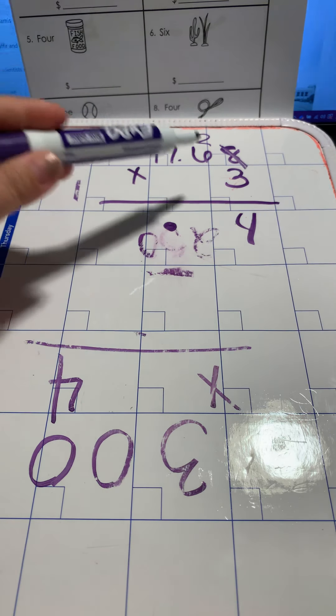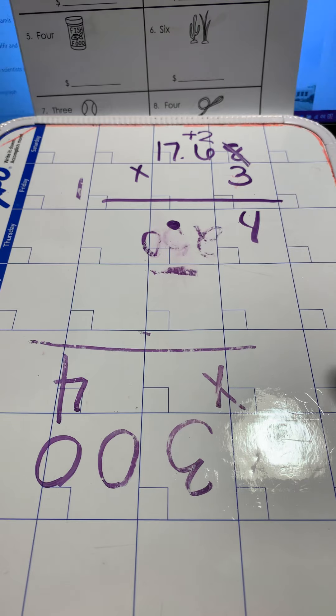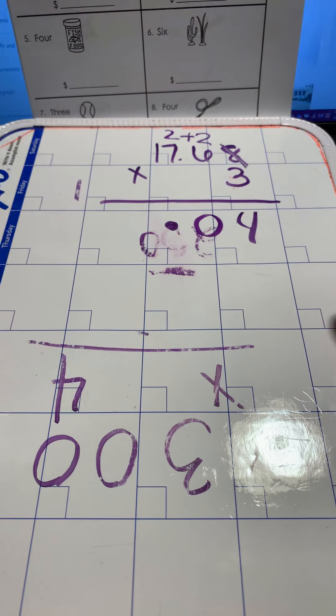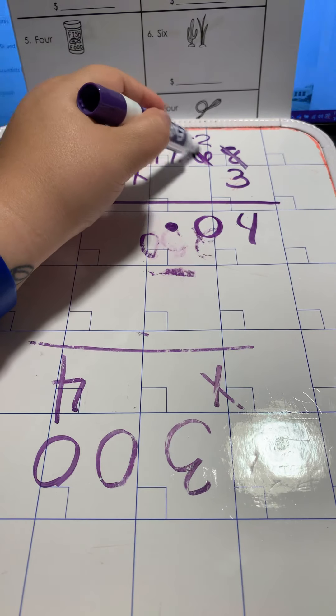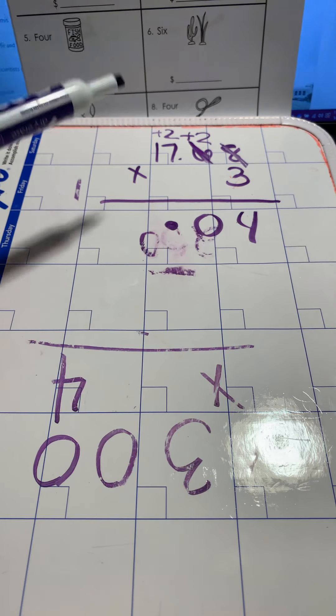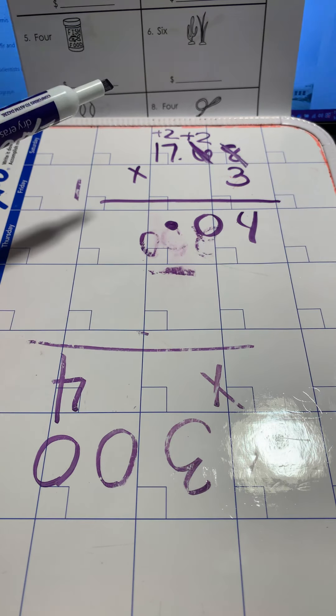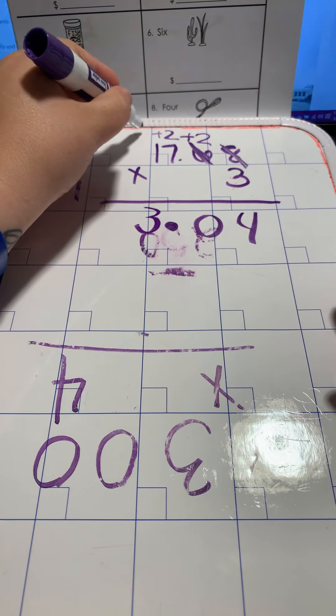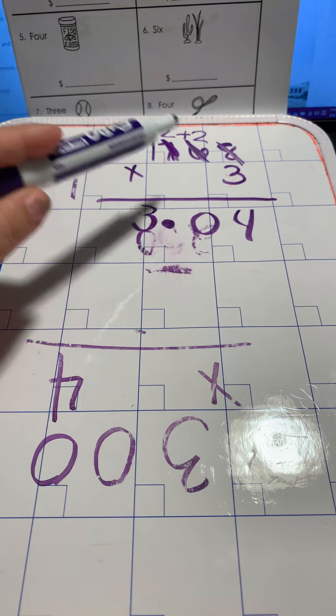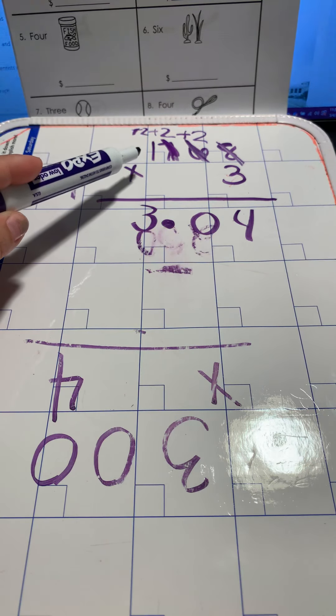And this is going to be a plus two. So then you're going to do three times six. Three times six is 18, plus two would be 20. Your zero comes down, your two goes up. Cross out your six, because you've already used it. Now, you need to do three times seven. Three times seven is 21, plus two, which is 23. Your three comes down, your plus two goes up. Cross out your seven, because it's done. Now you're going to do three times one, which is three, plus two, which is five. And you bring your five down.